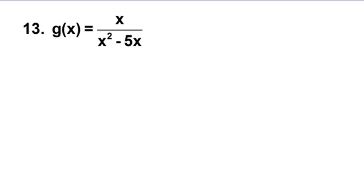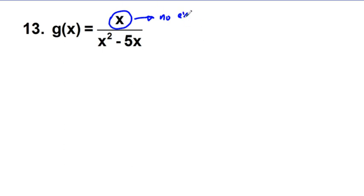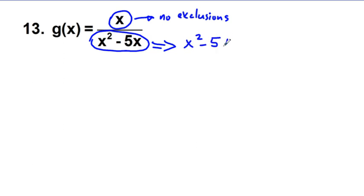Next, we go to odd number problem 13. Again, we look for exclusions. Based on the numerator x, there are no exclusions. But in the denominator, we have a possibility. We know that x squared minus 5x cannot equal zero. Solving: the greatest common factor between x squared and negative 5x is x, so we factor as x times quantity x minus 5, which is not equal to zero.